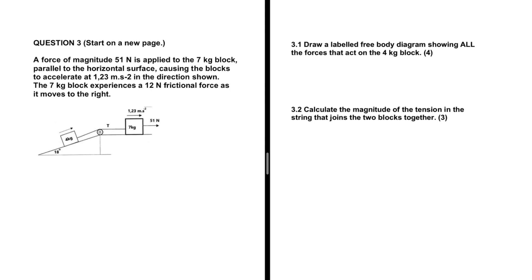Let's go through the problem statement and see what is going on. We have a force of 51 newtons applied to the 7 kg block parallel to the horizontal surface. This causes the blocks to accelerate at 1.23 meters per second squared in the direction shown. The 7 kg block experiences a 12 newton frictional force as it moves to the right. So we want a labeled free body diagram of all the forces acting on the 4 kg block.